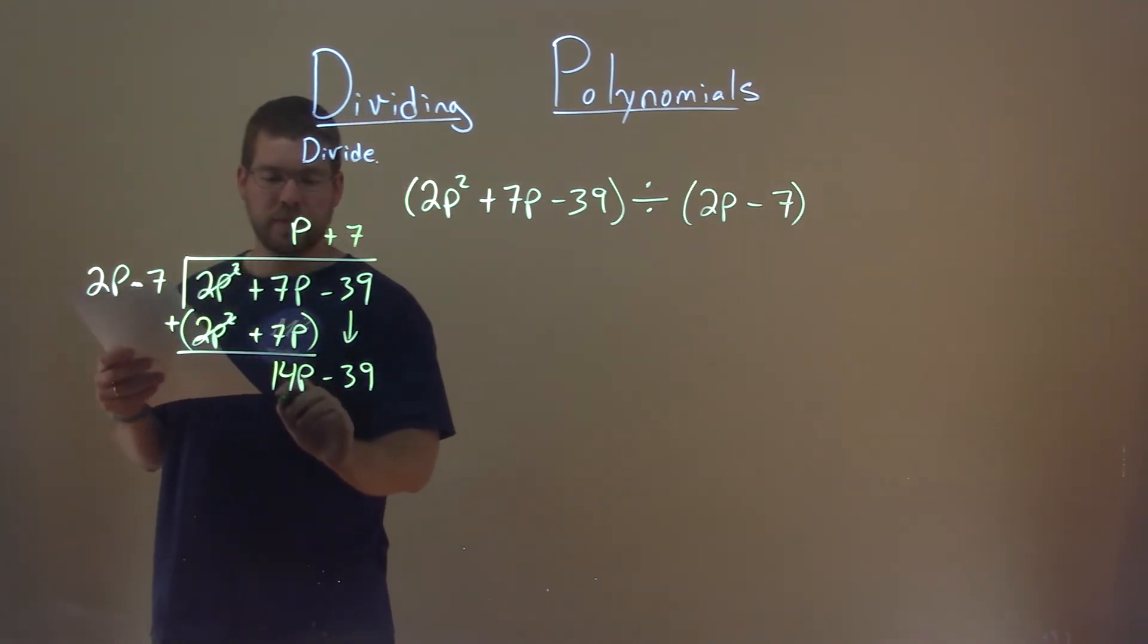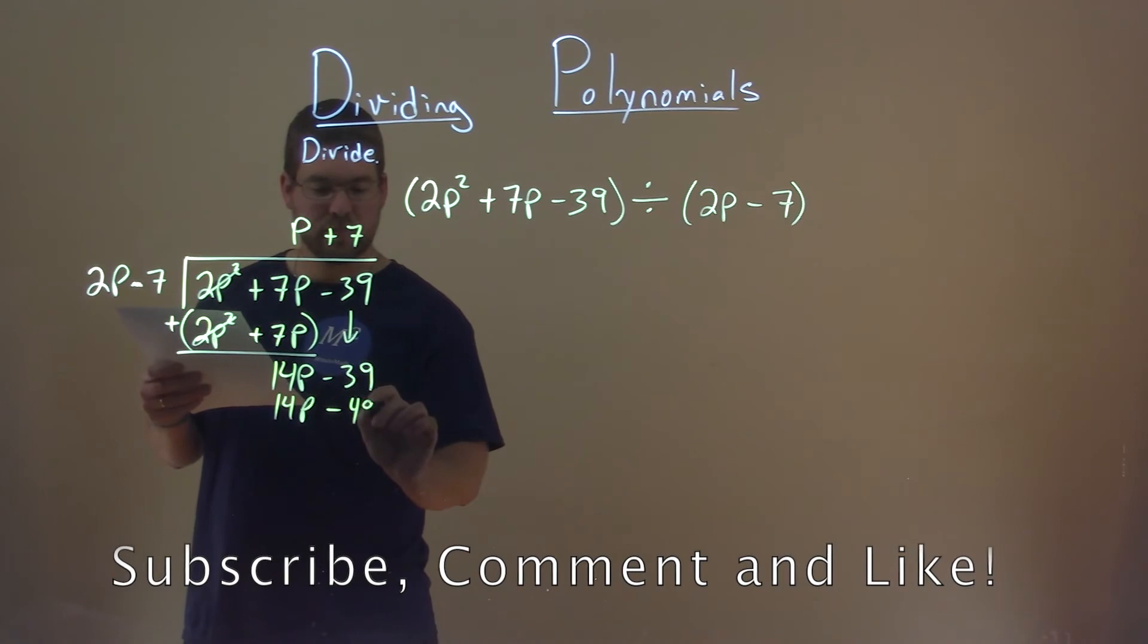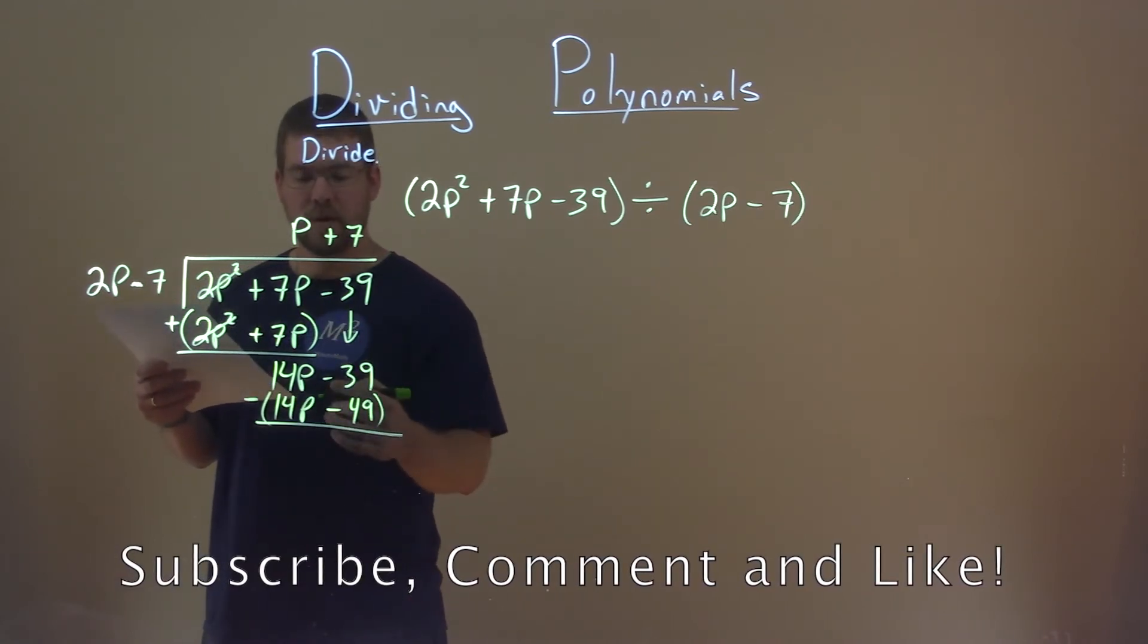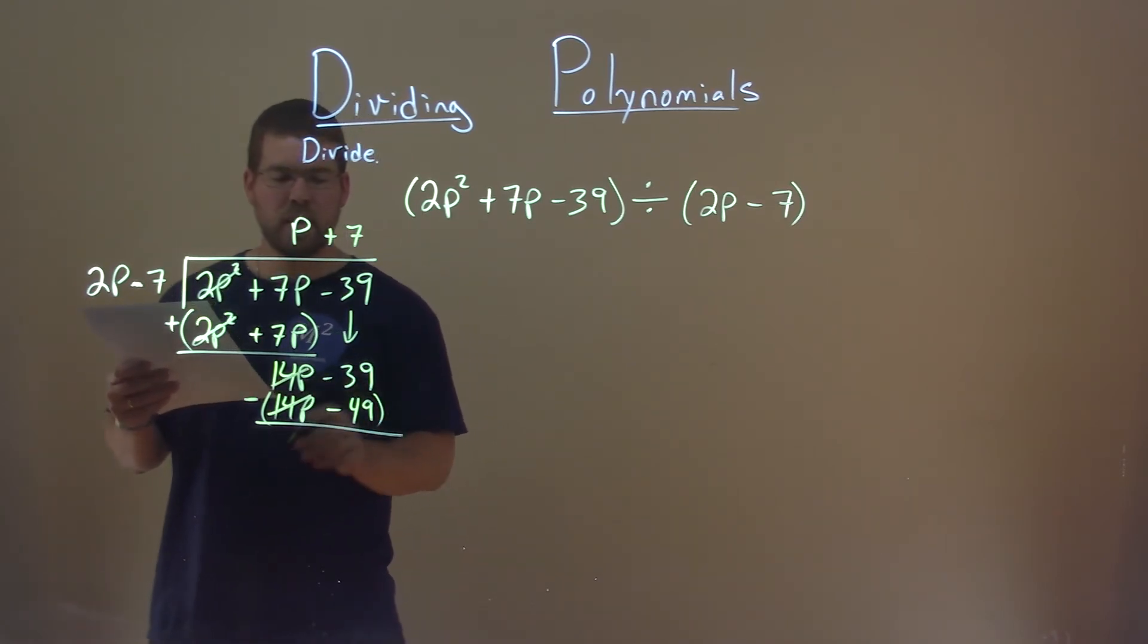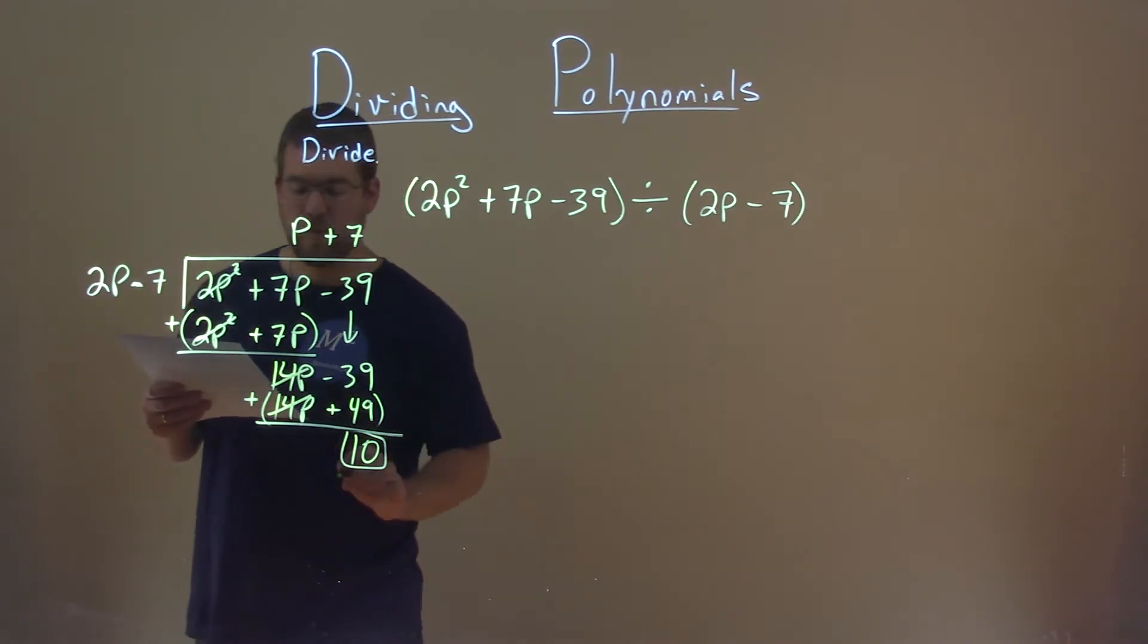7 times 2p is a 14p. 7 times a negative 7, well, is a negative 49. Now, we're subtracting the top and the bottom. 14p minus 14p cancels out at 0. Negative 39 minus a negative, looks like plus a positive. So, negative 39 plus a 49 is a positive 10, and that's our remainder.